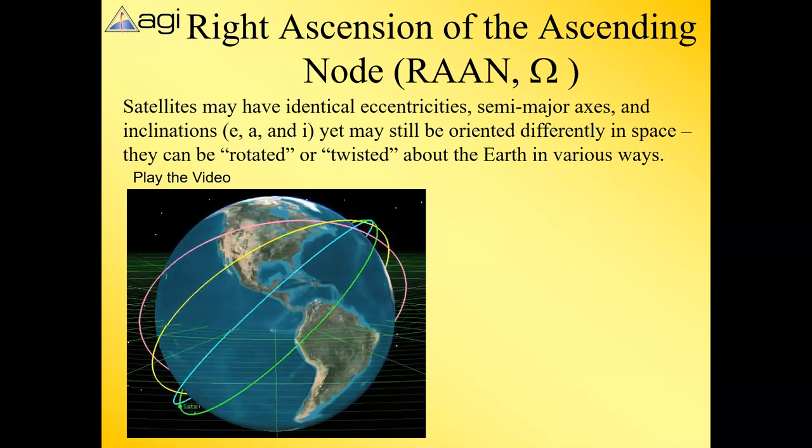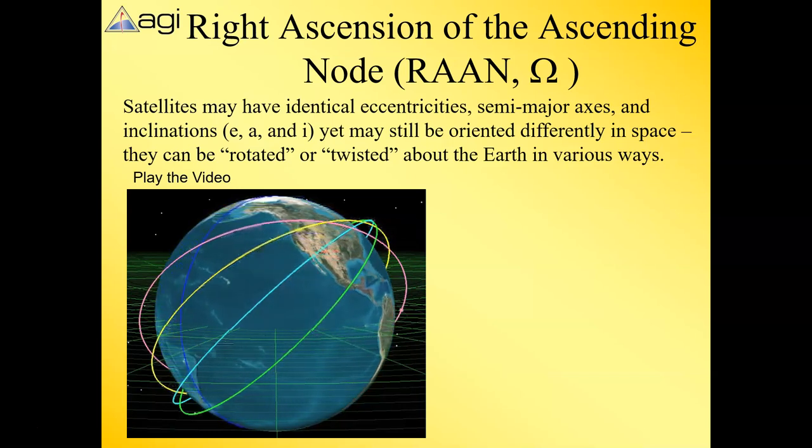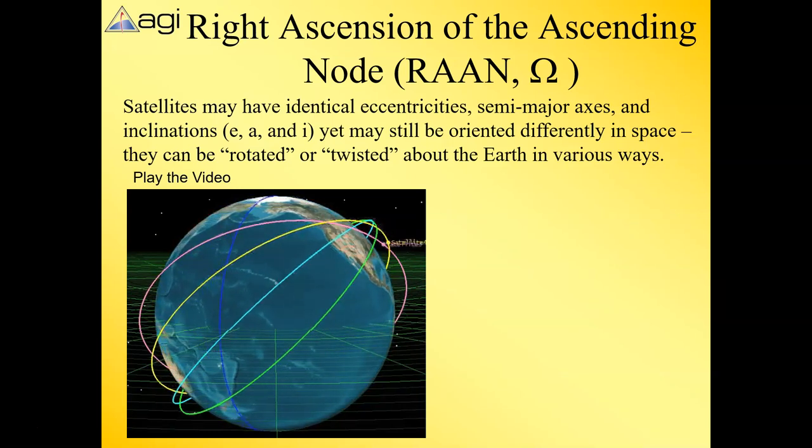You can see for yourself they all have the same period. Their plane doesn't move, but the Earth rotates beneath them. We need some way to reference where these orbits cross the equatorial plane, and that's called right ascension of the ascending node—RAN, or capital Omega, the little horseshoe.